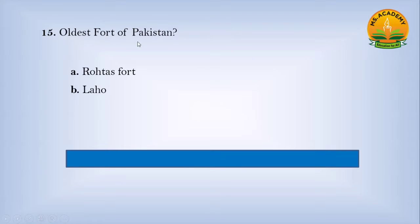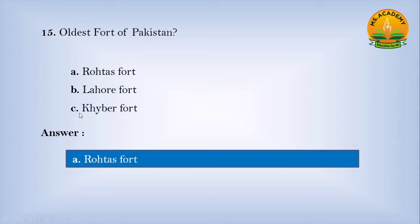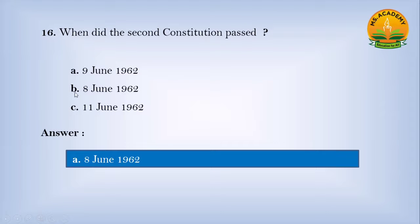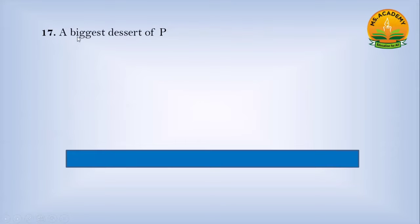Oldest fort of Pakistan: option A Rohtas Fort, option B Lahore Fort, option C Khyber Fort — answer is A, Rohtas Fort. When was the second constitution passed? Option A 9 June 1962, option B 8 June 1962, option C 11 June 1962 — correct answer is B, 8 June 1962.